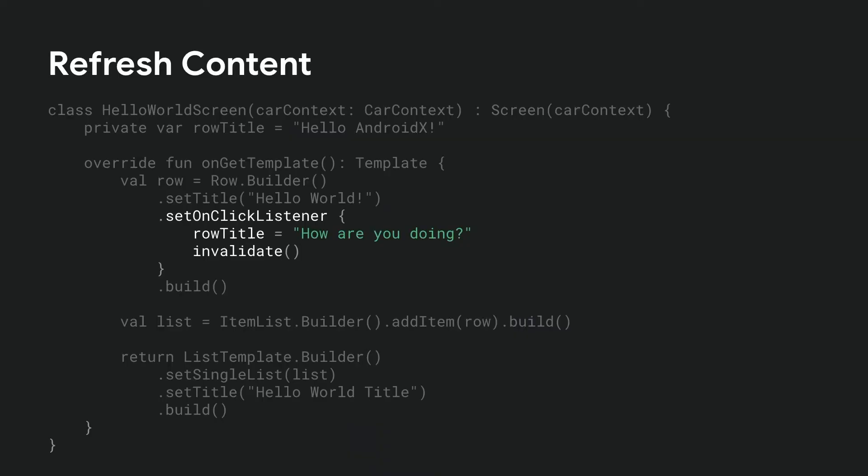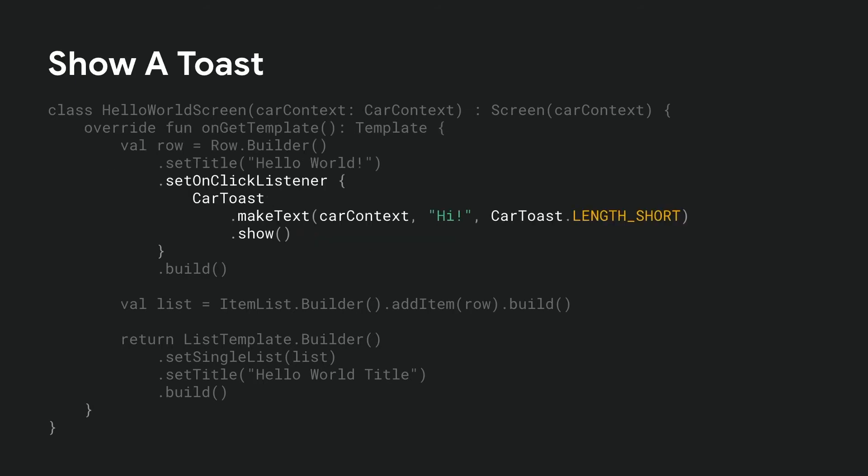Here, when the user taps on the row, we update the row text. The invalidate call notifies the host that the screen needs to be updated. In order to show a toast, you can use the CarToast class as shown here. The usage pattern is the same as the regular Toast class.